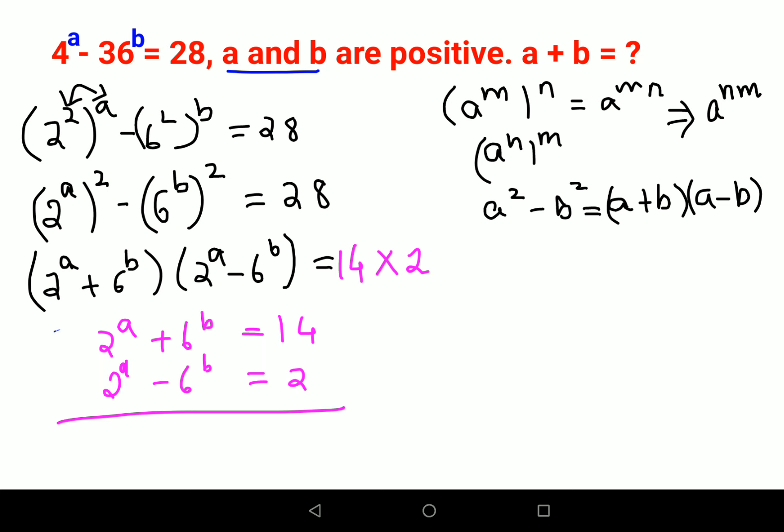Adding all the equations we'll get 2 times 2 raised to a equals to 16. Therefore dividing both sides by 2, I will say 2 raised to a equals to 8, therefore a will be 3.